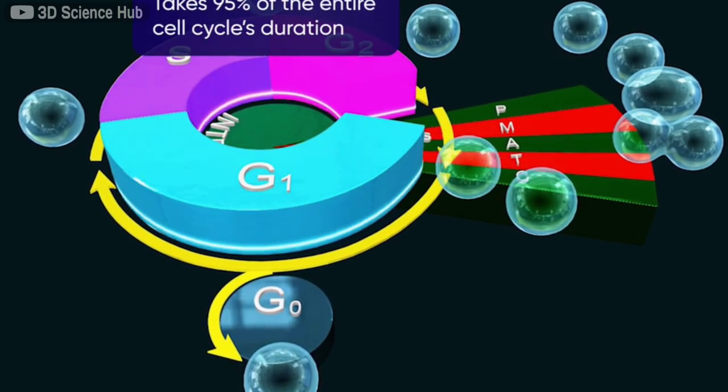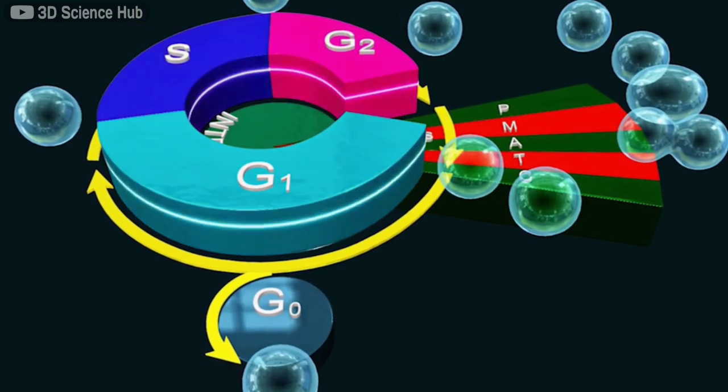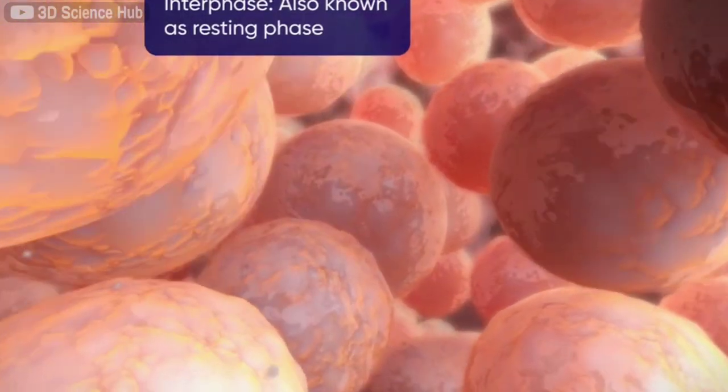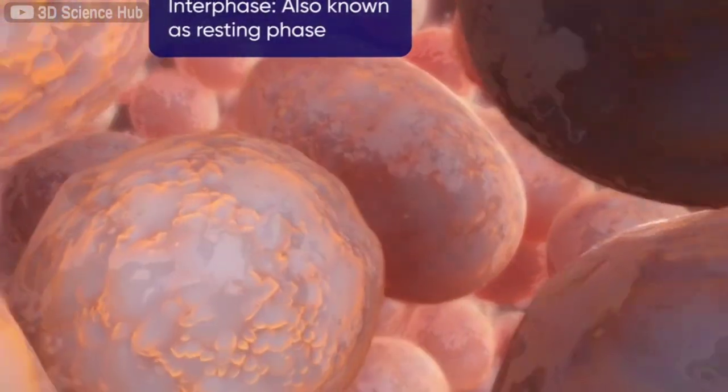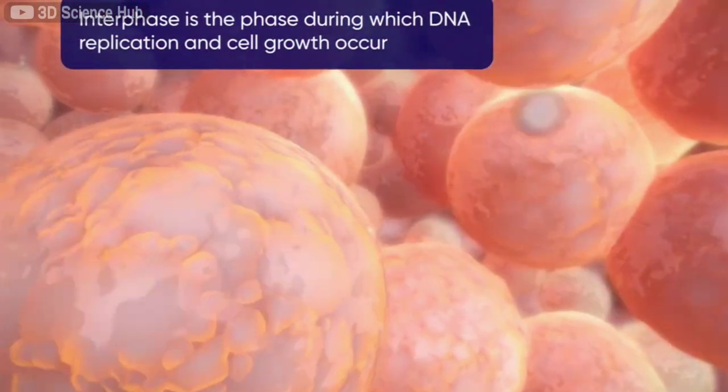It is the phase in which the cell prepares to divide. The interphase, from 'inter' meaning between, also called the resting phase, is the phase of the cycle in which the processes of cell growth and DNA replication take place.